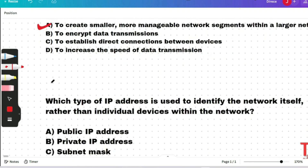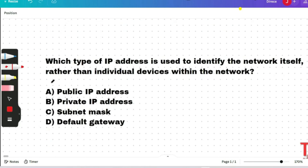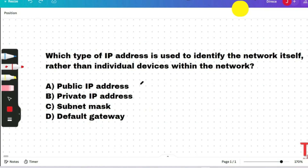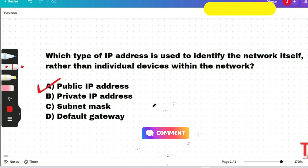The next question: Which type of IP address is used to identify the network itself rather than individual devices within the network? A public IP address will be the correct answer. A public IP address is used to identify networks on the internet, while private IP addresses are used for individual devices within a network.